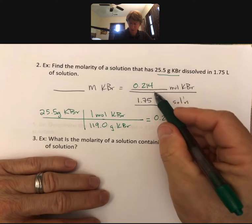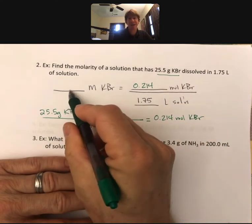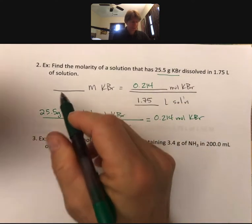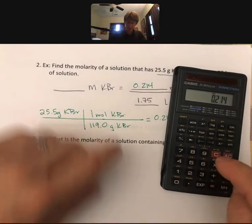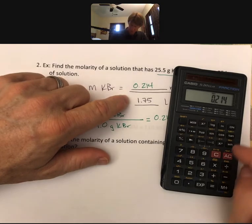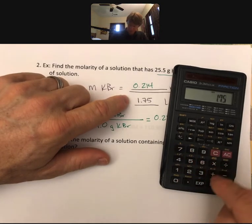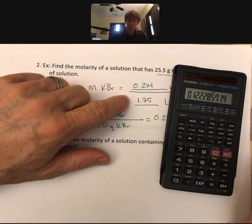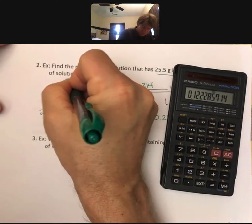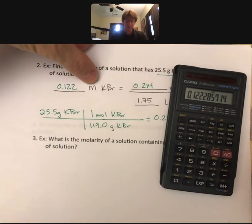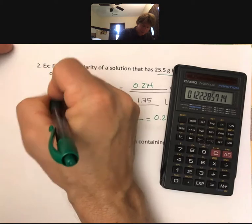And my moles divided by my liters is how I'm going to find my molarity. So I'll just go back to 0.214, divide it by the 1.75, and I get 0.122 to three sig figs. And that's molarity or molar potassium bromide, and that is my answer for this problem.